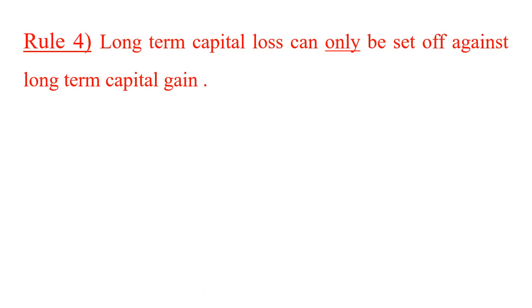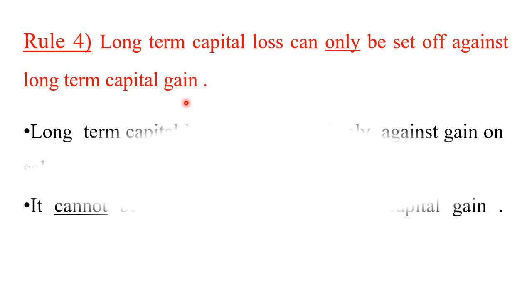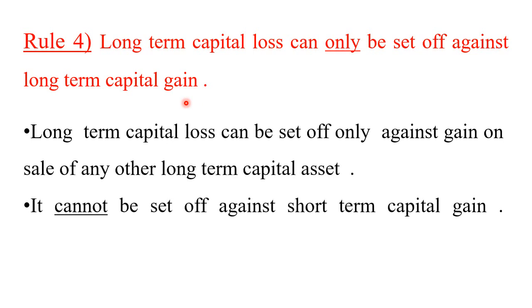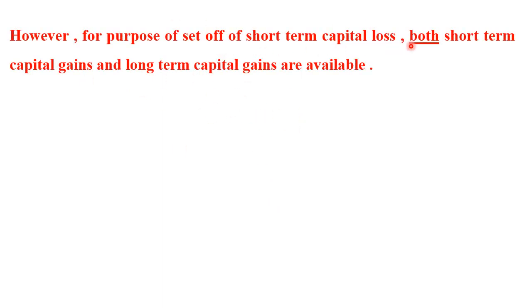Rule number 4: long term capital loss can only be set off against long term capital gain. Within capital gains there is long term capital gain and short term capital gain. Long term capital loss can only be set off against long term capital gain — it cannot be set off against short term capital gain. However, short term capital loss can be adjusted against either short term capital gain or long term capital gain.